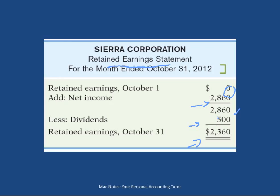Therefore the retained earnings balance is two thousand three hundred sixty. So there you have the two statements: the income statement, which is a summary of business operations for a particular period in time showing revenue in excess of expenses — called profit or net income — which belongs to the shareholders. And the retained earnings statement, which gives a summary of the earnings the company has earned and retained, including the company name, statement name, and time period.